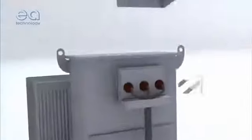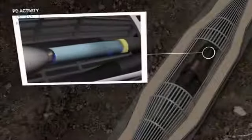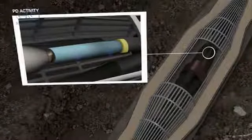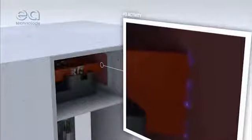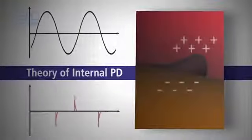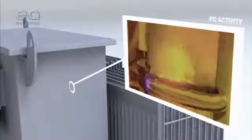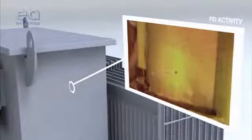Partial discharge, or PD for short, can be found in all types of high voltage assets, from switchgear to transformers and from overhead lines to underground cables. It causes degradation of assets and can lead to failures. A partial discharge is an electrical discharge or spark that bridges a small portion of the insulation between two conducting electrodes. PD activity can occur at any point in the insulation system where the electric field strength is greater than the breakdown strength of the insulating material.